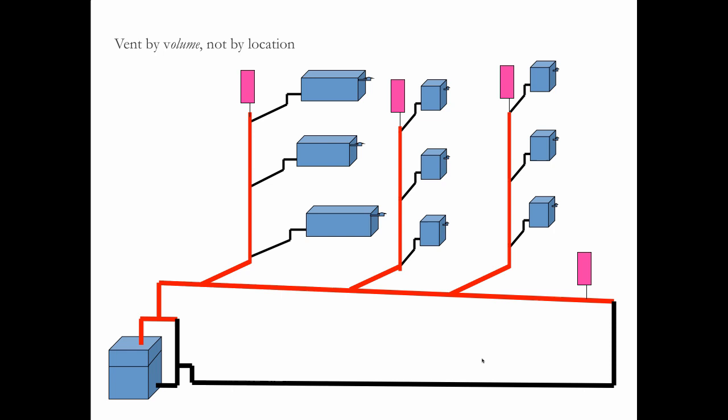So we vent by volume, not by the location. We don't vent fast radiated, vent fast because it's far, it's slow because it's near the boiler. We vent by volume, not by location. This stuff works, my friend.